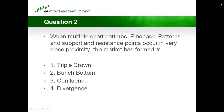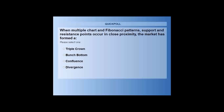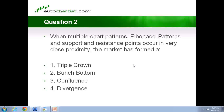Here's a question: when multiple chart patterns, Fibonacci patterns, and support/resistance points occur in very close proximity, the market has formed a — choose one: triple crown, bunch bottom, confluence, or divergence. Confluence is what we're looking for. You have a bunch of prices and patterns coming in, all agreeing that a certain point is very critical. Now the job is simple — all you're doing is reading the momentum and the direction.